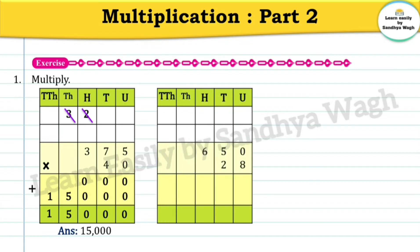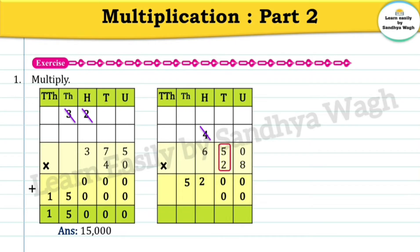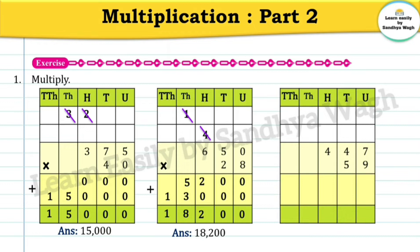Next example: 650 multiplied by 28. Eight multiplied by zero is zero, eight multiplied by five is 40 so write zero and carry four, eight multiplied by six is 48 plus four is 52, write 2 and carry five. Now multiply by 2: two zeros are zero, two fives are ten so write zero and carry one, two sixes are twelve, twelve plus one is thirteen. Adding: zero plus zero zero; two plus zero two; five plus three eight; and one. Our final answer is 18,200.